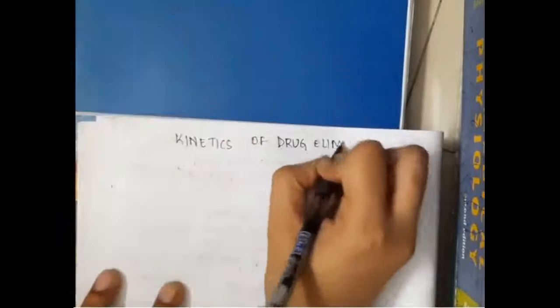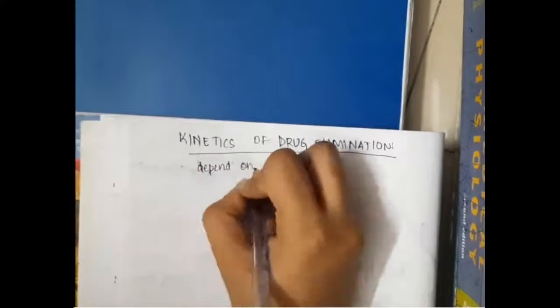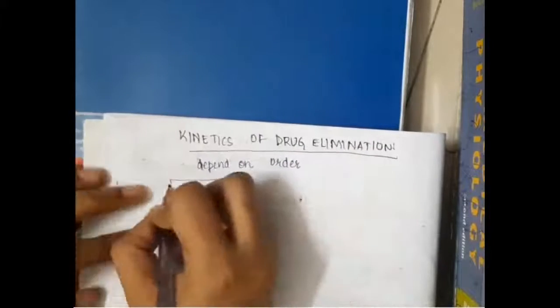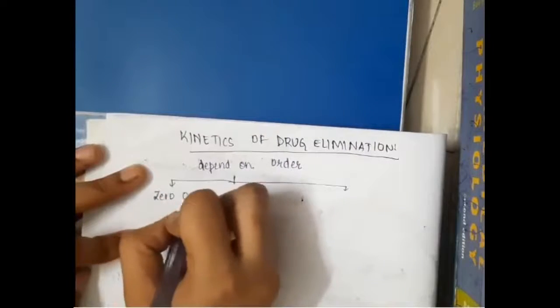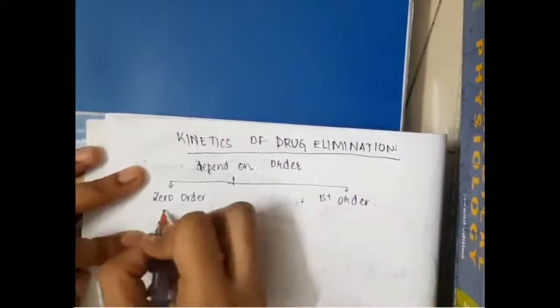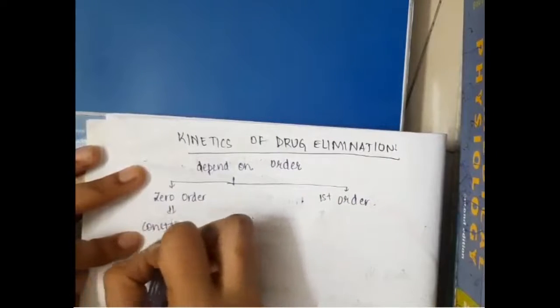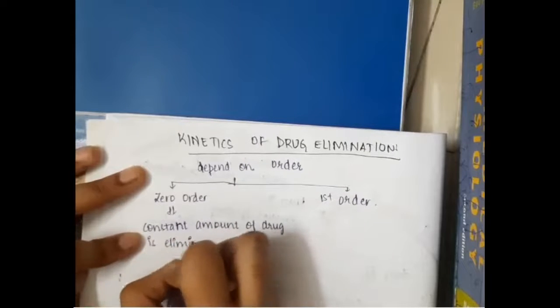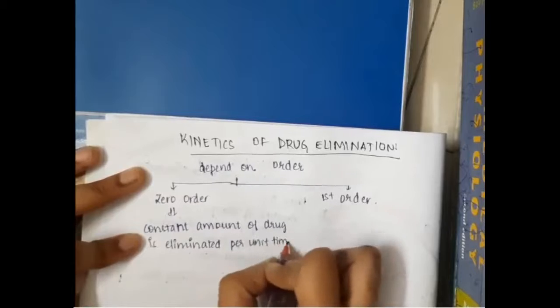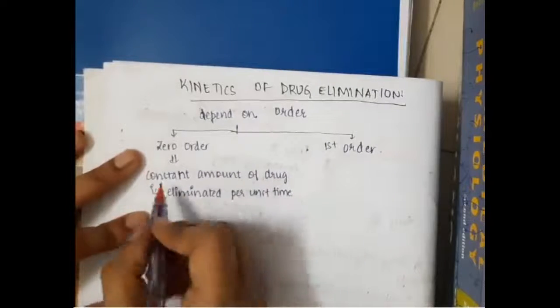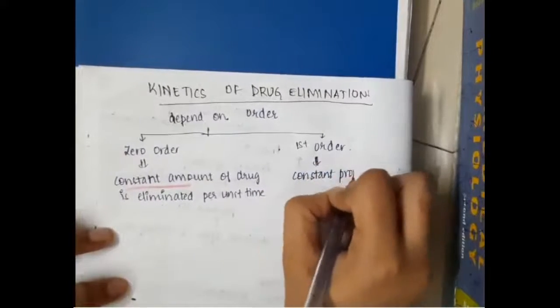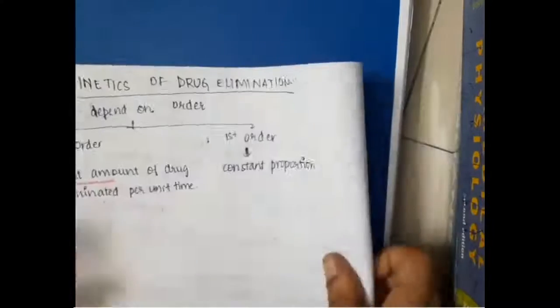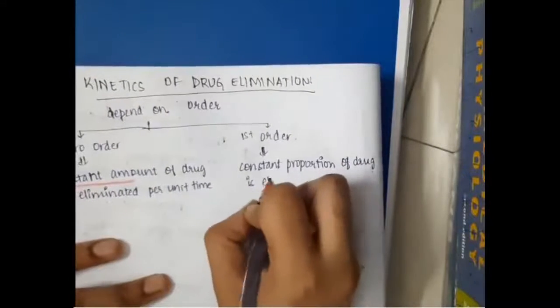We have the kinetics of drug elimination, which are very important and depend upon the order of the drugs. Drugs are divided into zero-order drugs and first-order drugs. In zero-order drugs, a constant amount of drug is eliminated per unit time.